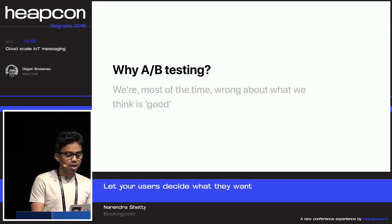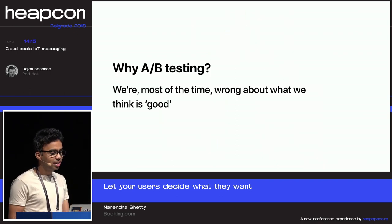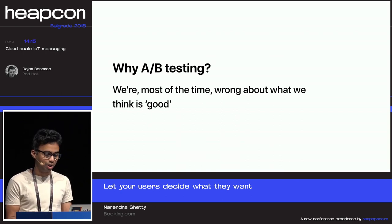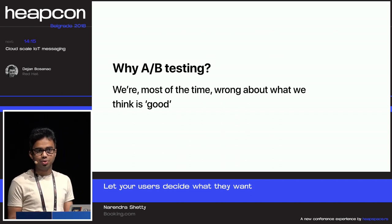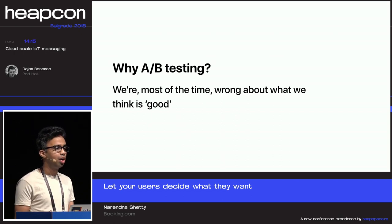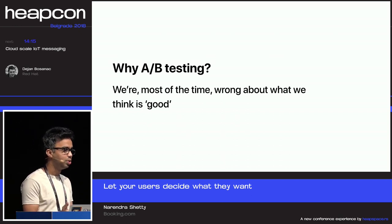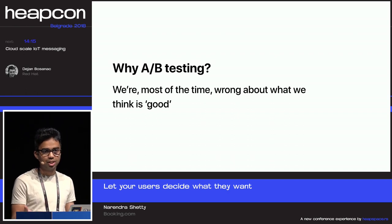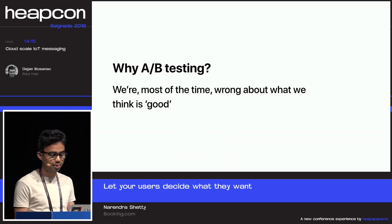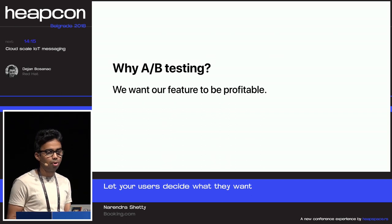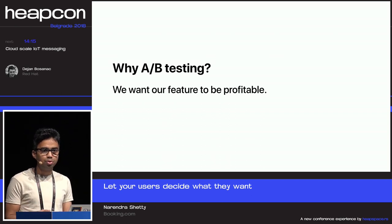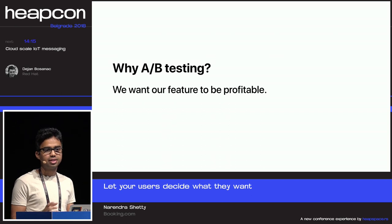Why A/B testing? The main reason is we are most of the time wrong about what we think is good. All of us in this room are wrong most of the time — what you think is good for the users is not really true. By putting that out to users and doing A/B testing, you measure the impact and decide whether it's really good. Whatever changes you do must be profitable; the product should improve in a way that serves the business needs.